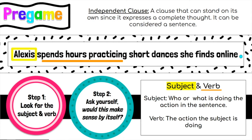What happens is people put independent clauses together without a comma, without a period, or without some of the other fixes we have here — and so we're going to practice finding these independent clauses and how to change them so they're no longer run-on sentences.